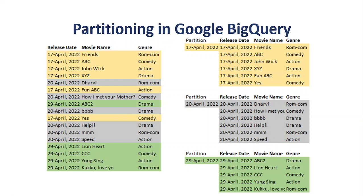Why do we do partitioning in the first place? Partitioning makes our queries faster — it decreases the time to query something. Imagine if we have to query a record from a large table; the engine has to iterate over the whole table. But if it is partitioned and our WHERE clause has a condition like 'WHERE release_date = 17th April 2022', BigQuery will only look for data in that partition and won't bother checking the other partitions. That's how query performance improves.